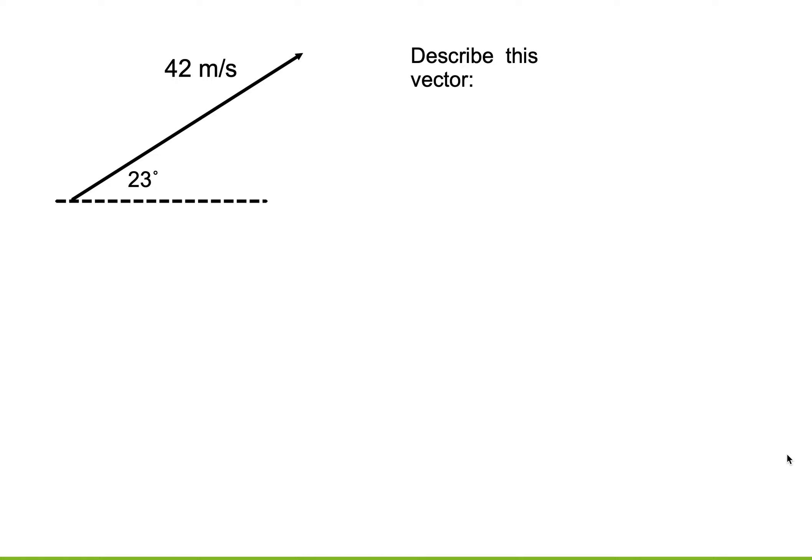We left off yesterday talking about the fact that vectors always have direction, and we were discussing how to describe the angle. If you're going to use cardinal directions—north, south, east, and west—then you have to be very specific about how you describe this angle.